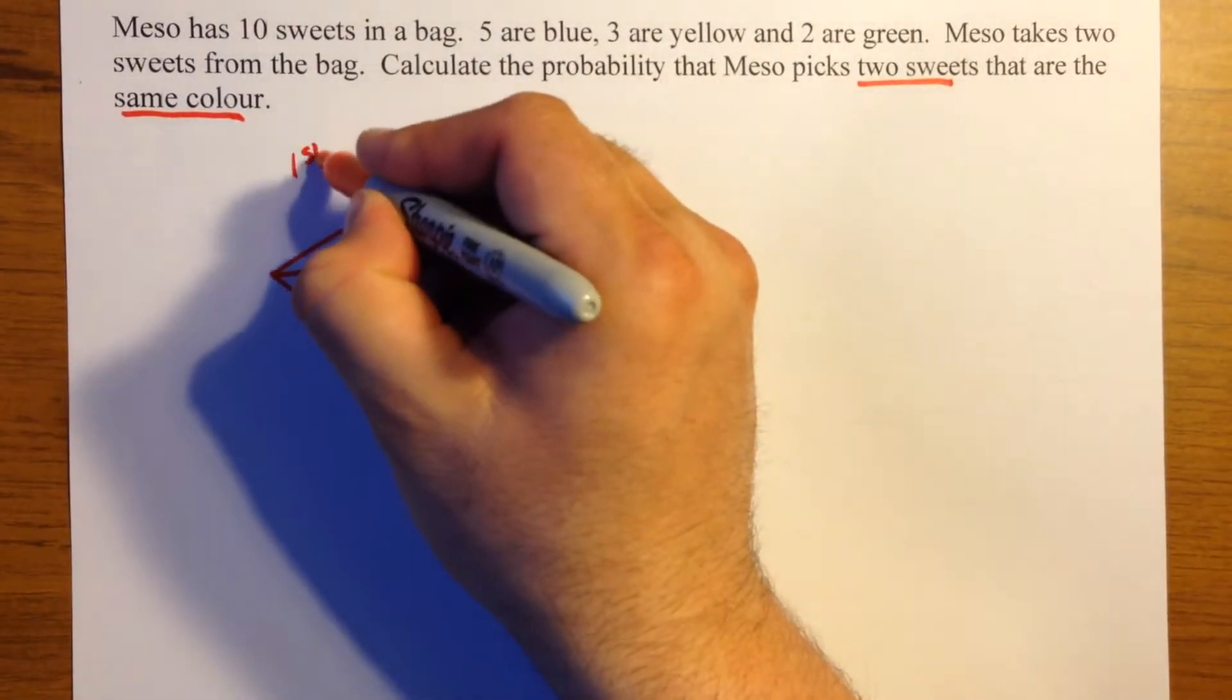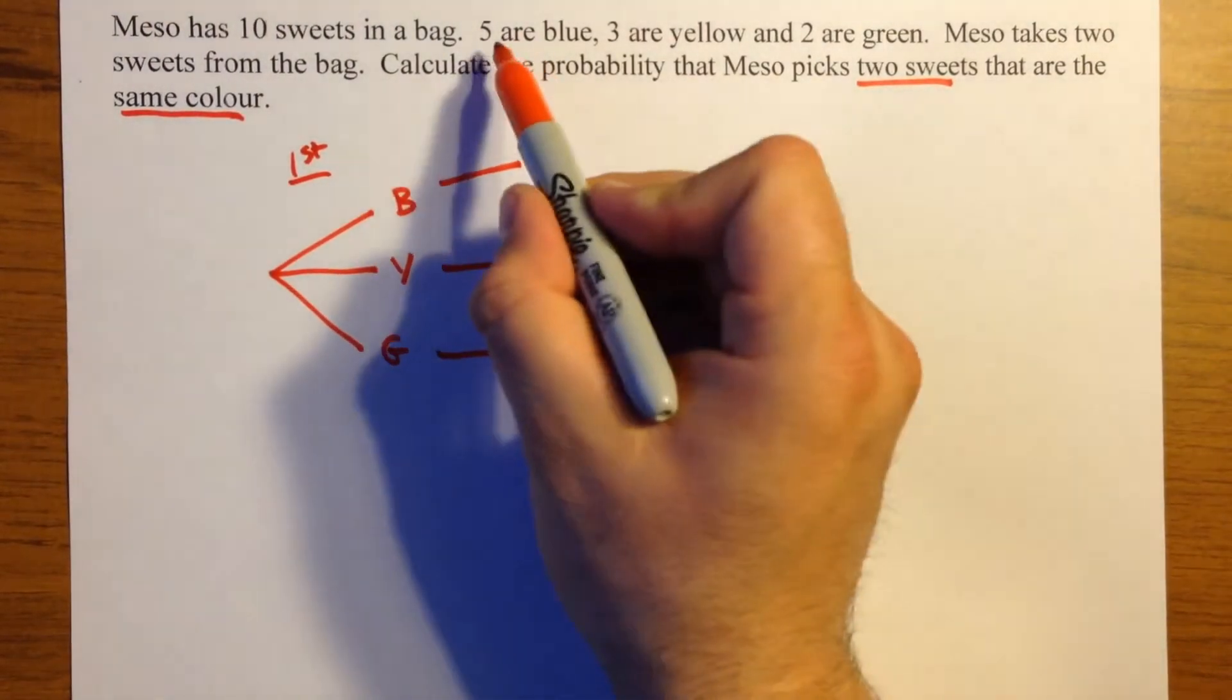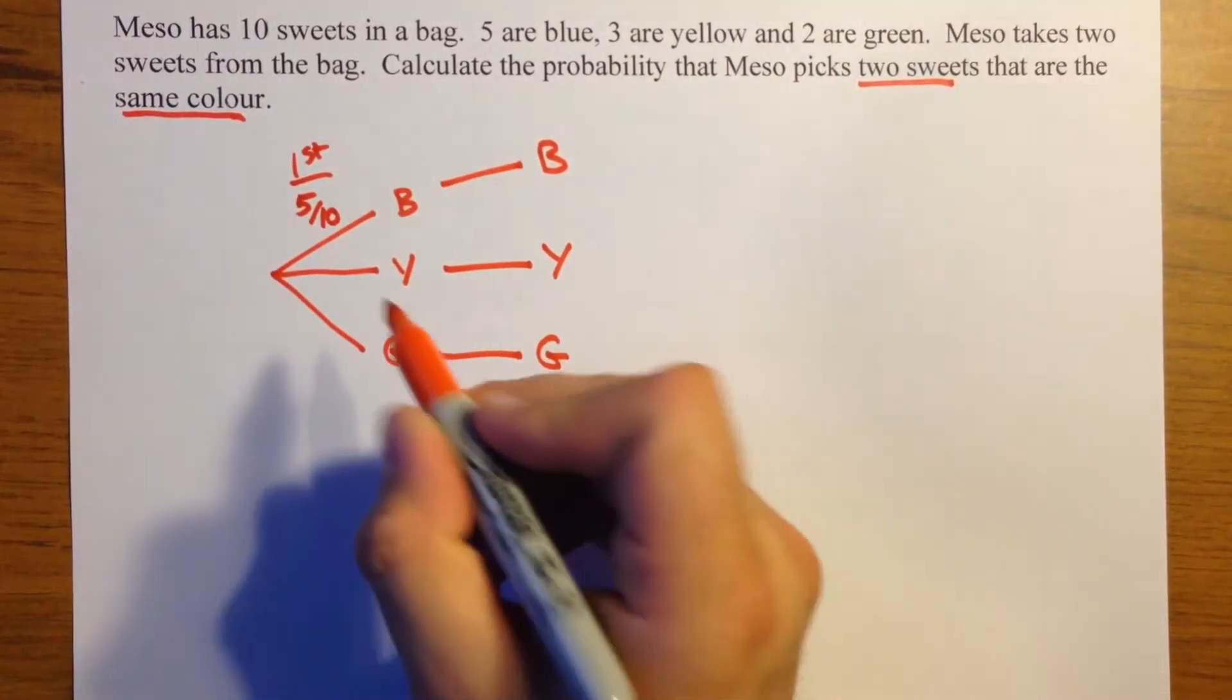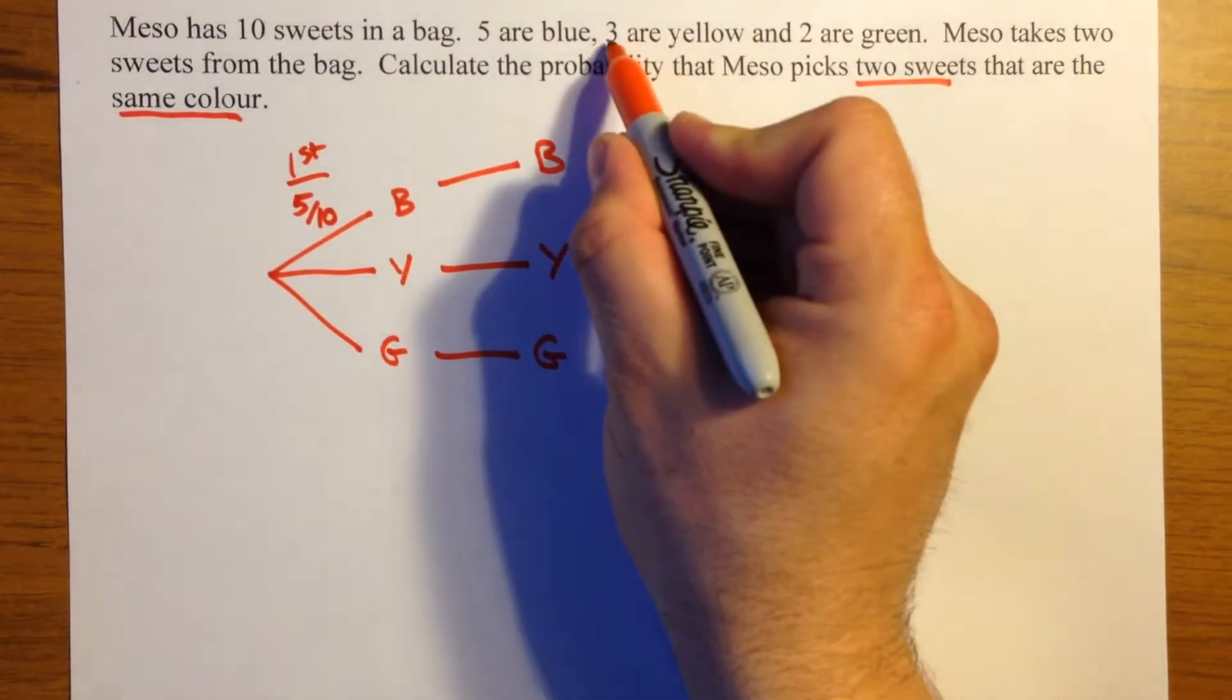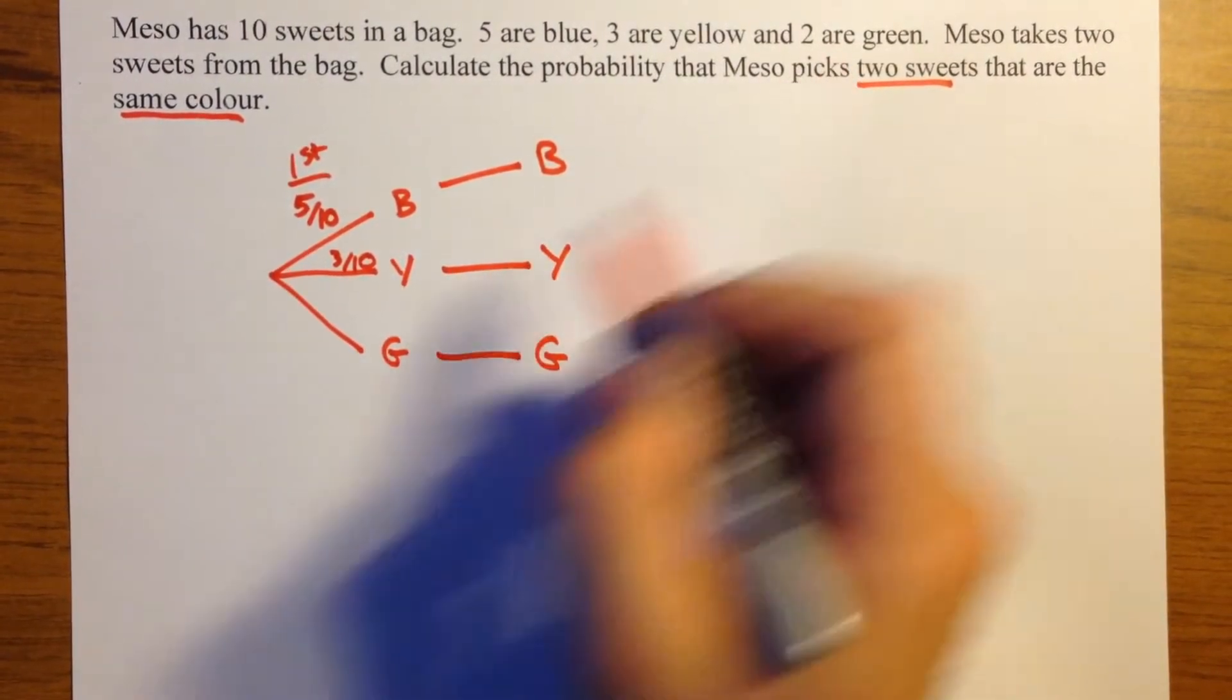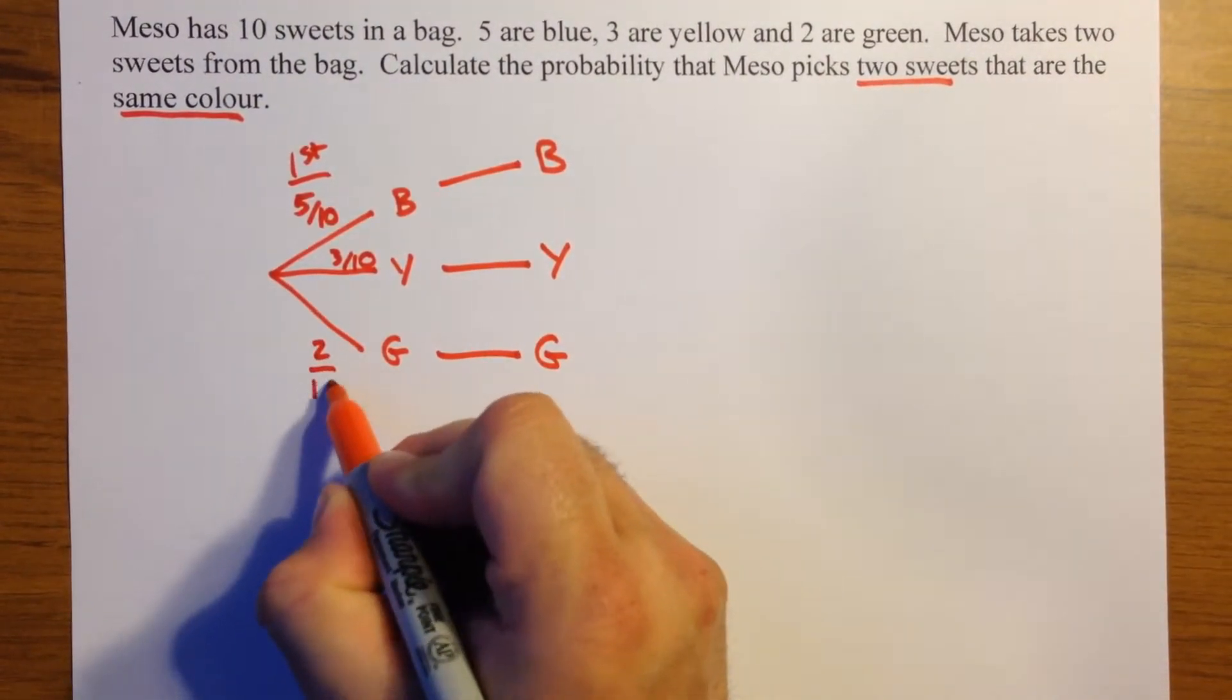So, for the first sweet the chance of picking blue is five out of ten. The chance of picking yellow is three out of ten, and the chance of picking green is two out of ten.